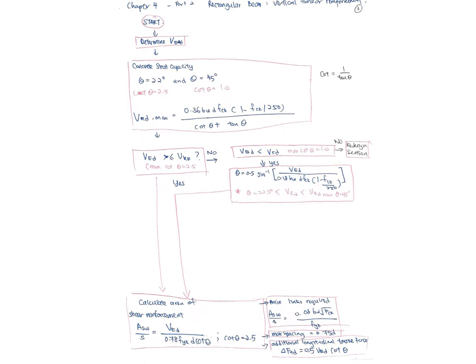Now for vertical shear reinforcement. Start by calculating VEd, then the concrete strut capacity. For theta = 22°, cot θ = 2.5; for theta = 45°, cot θ = 1. VRd,max = 0.3·bw·d·fck·(1 − fck/250) / (cot θ + tan θ). Calculate VEd and VRd,max. If VEd ≤ VRd,max at cot θ = 2.5, you can proceed directly.